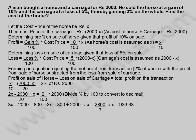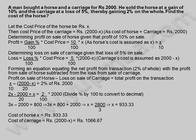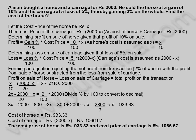X equals 2,800 by 3, so the cost price of horse equals Rs. 933.33. Cost of carriage is equal to 2,000 minus X, which equals Rs. 1,066.67. Therefore, the cost price of horse is Rs. 933.33 and cost price of carriage is Rs. 1,066.67.